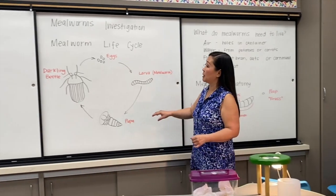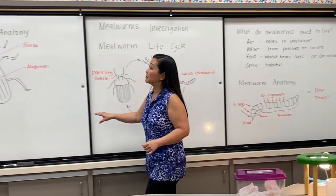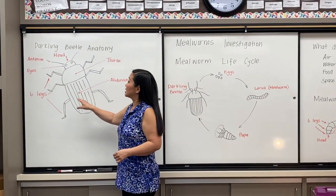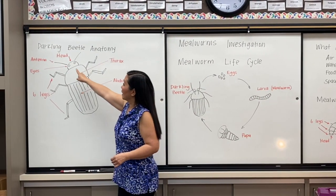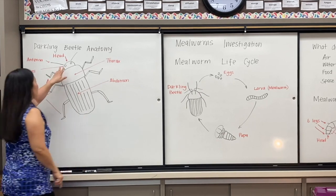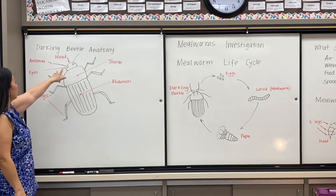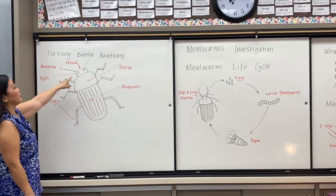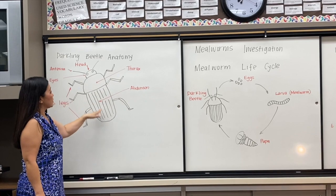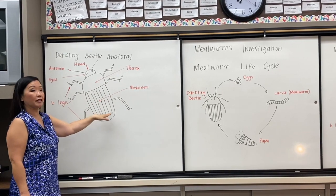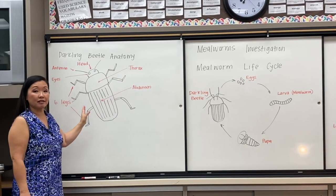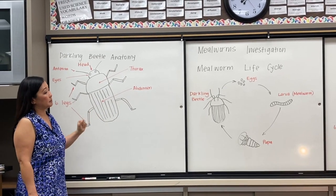When they become a beetle, this is what their anatomy looks like. They have a head, two antennae, and eyes. They have a thorax, the back part is called the abdomen, and they have six legs.